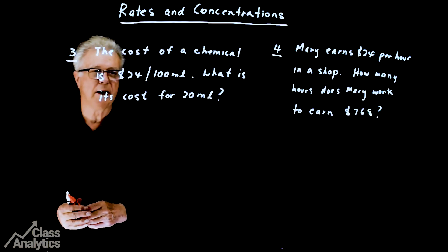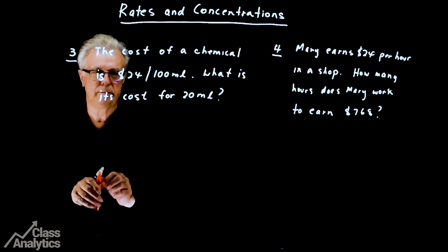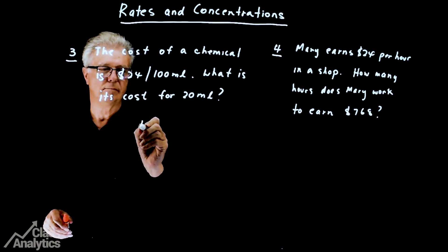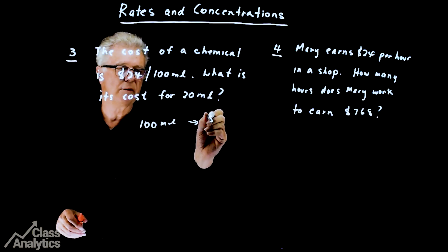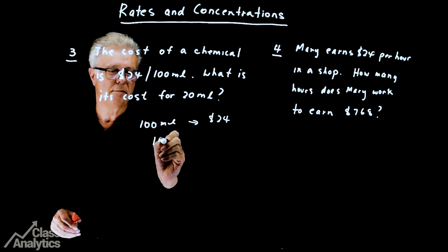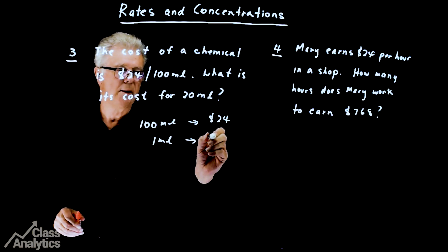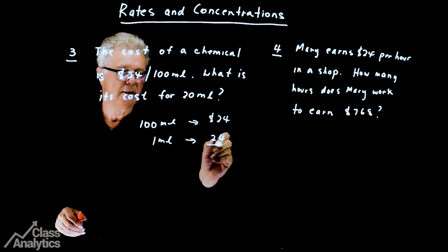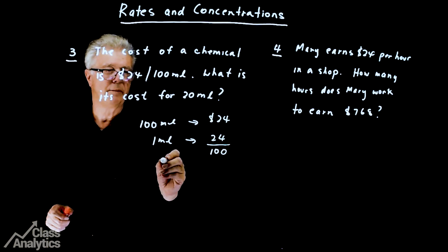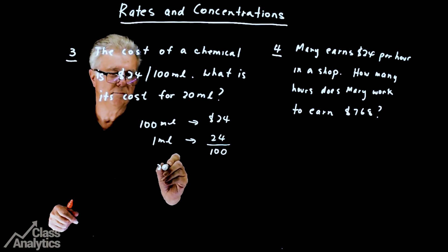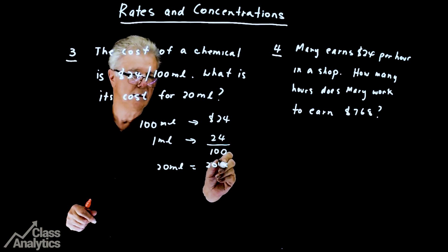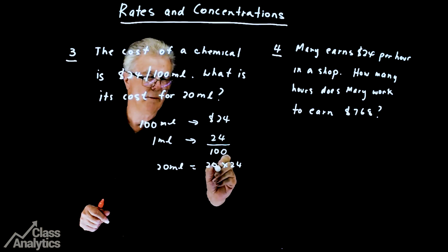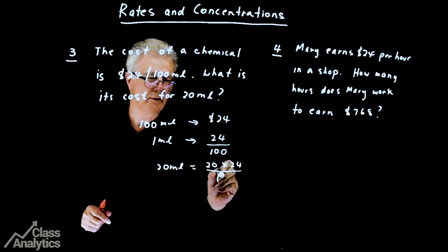Well, what we'll say is 100ml gives me $24. So 1ml will be equal to 24 divided by 100. Therefore, 20ml will be equal to 20 times 24 over 100.